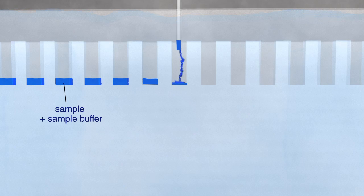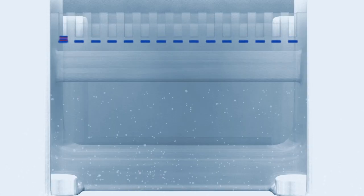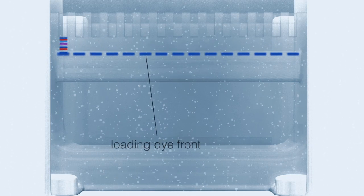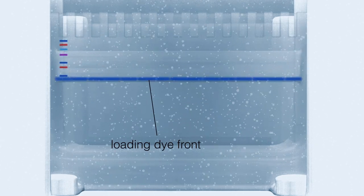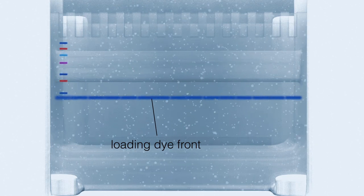Sample buffer also contains a negatively charged dye, typically bromophenol blue, used to monitor the progress of electrophoresis. Tracking or loading dyes, as they are often referred to, have low molecular weights and migrate ahead of most proteins within the protein sample.